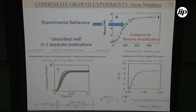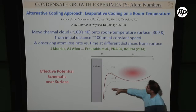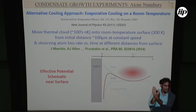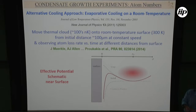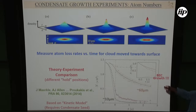There's another approach: evaporative cooling at the surface. You move your condensate to a room-temperature surface at constant speed. As you move close, you get atom loss but also compression, enough to reach the right phase-space density for condensate formation. You can vary the distance at which you hold the system, and remarkably with this kinetic approach you can see condensate growth as a function of time.